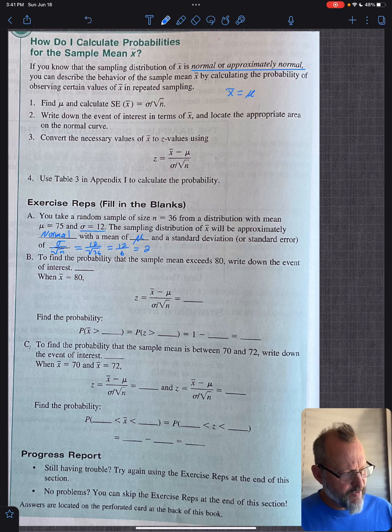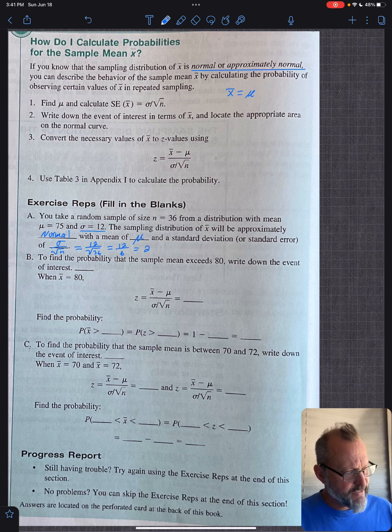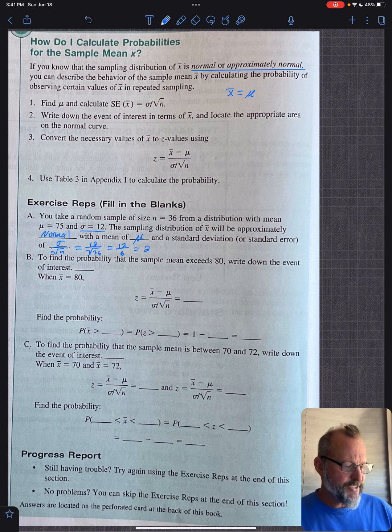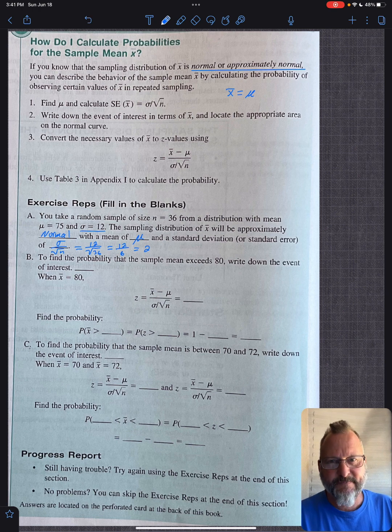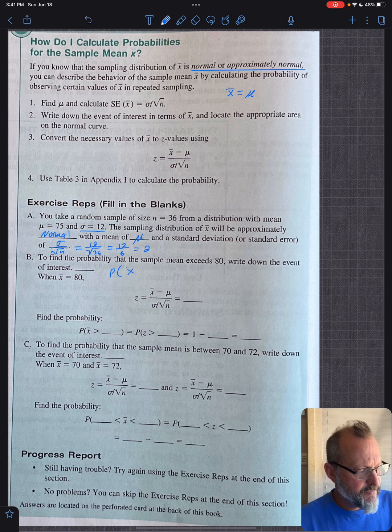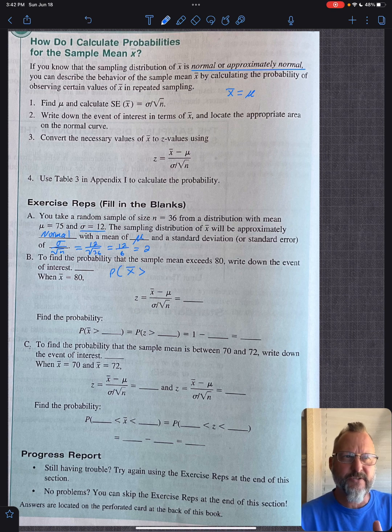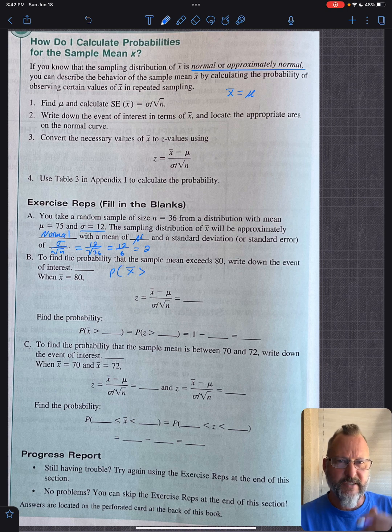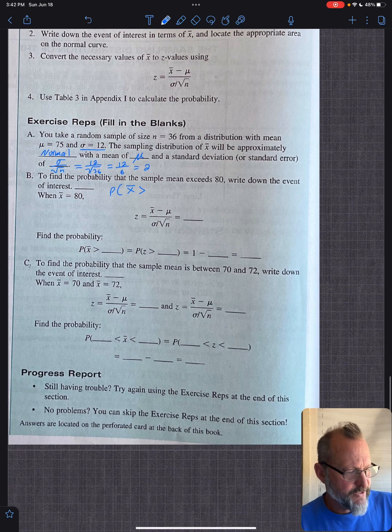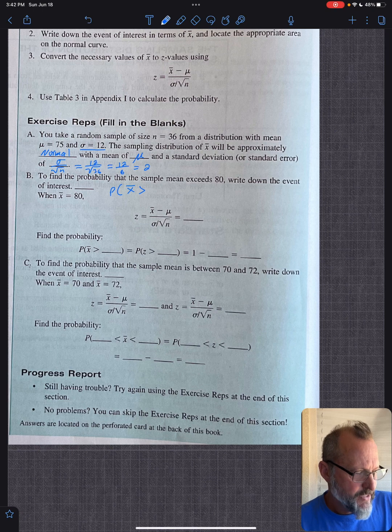To find the probability that the sample mean exceeds 80, write down the event of interest. It's asking you, what is the probability that the sample mean exceeds 80? So you're asking the probability that X bar is greater than 80. You're assuming it's a continuous random variable, and you don't care about the equals for these cases, for a normal distribution.